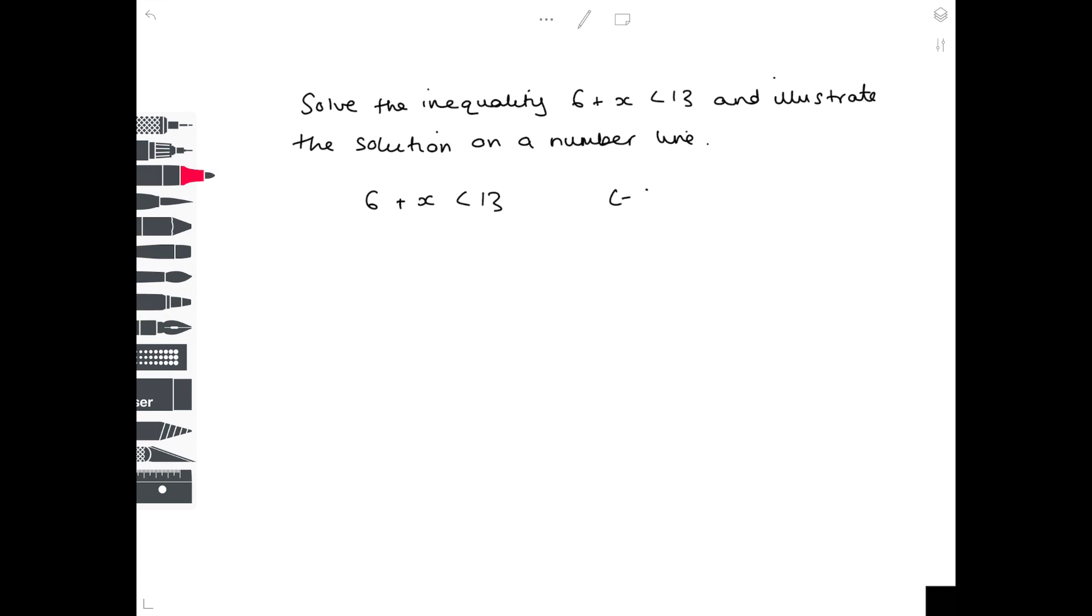So how do we get x by itself? Well, we need to take away 6. And that needs to happen to both sides. So 13 take away 6 is obviously 7. So x must be less than 7.